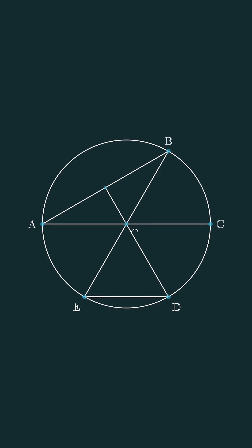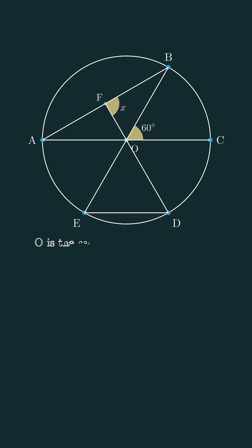Let's imagine we have a circle like this. Angles of 60 degrees and x are given in the diagram. Now the question is, given that O is the center of the circle and AC is parallel to ED, what is the value of x?